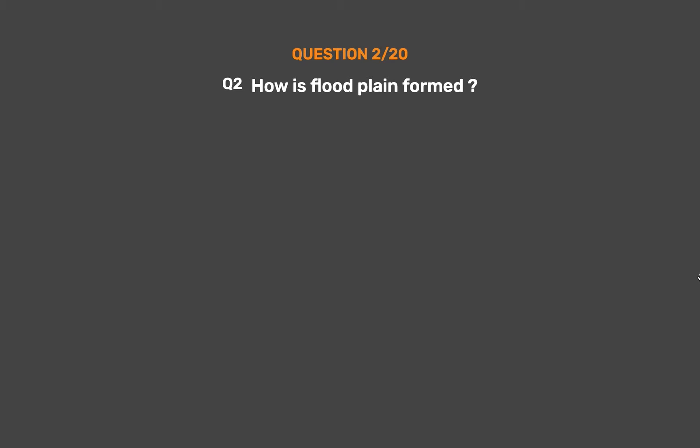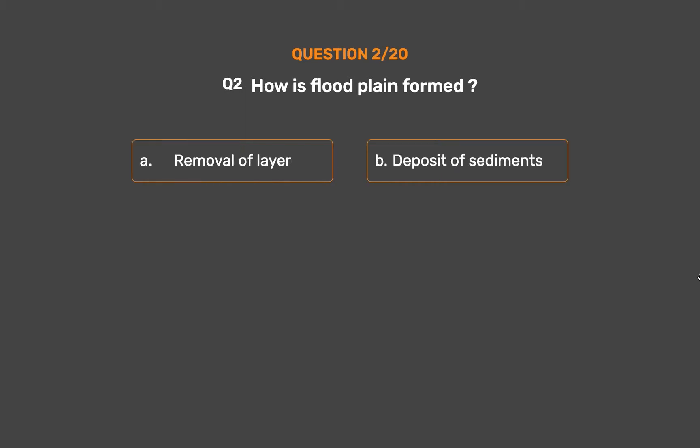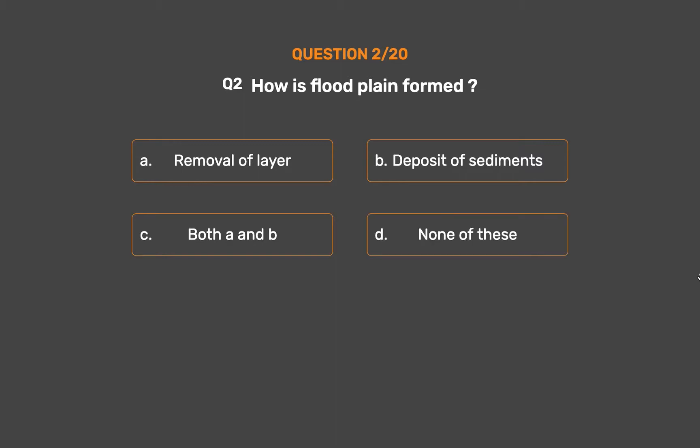Question No. 2: How is a floodplain formed? Option A: Removal of layer. Option B: Deposit of sediments. Option C: Both A and B. Option D: None of these.